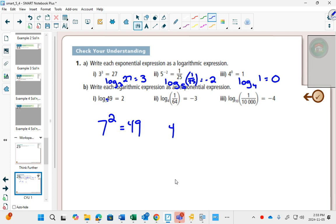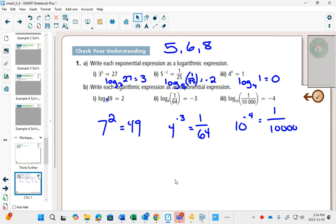Then the second one, the base of 4, exponent is negative 3. So 4 to the negative 3 is 1/64. And finally, the base is 10. The exponent is negative 4. It'll equal 1/10,000. So questions for practice. On this one, 5, 6, and 8.